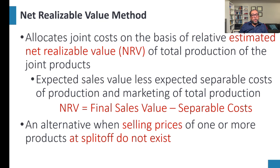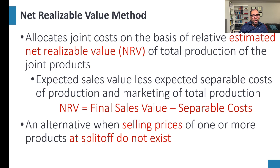The third method is the net realizable value (NRV) method. We allocate joint cost on the basis of the relatively estimated NRV of total production. NRV = expected final sales value minus expected separable costs of production and marketing. This is an alternative when selling prices of products at split-off do not exist — when the saleable value is not available at the split-off point, we use NRV instead.